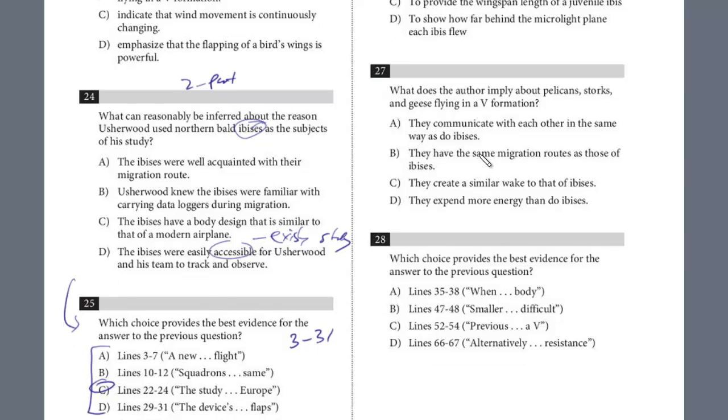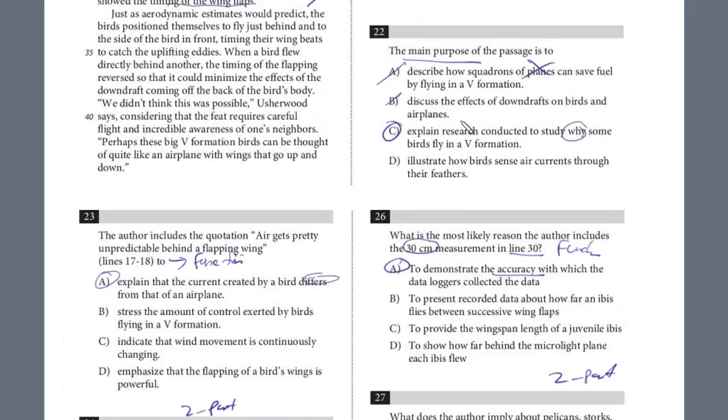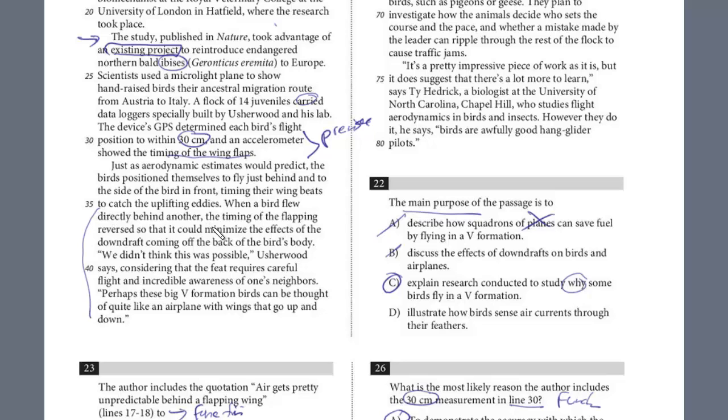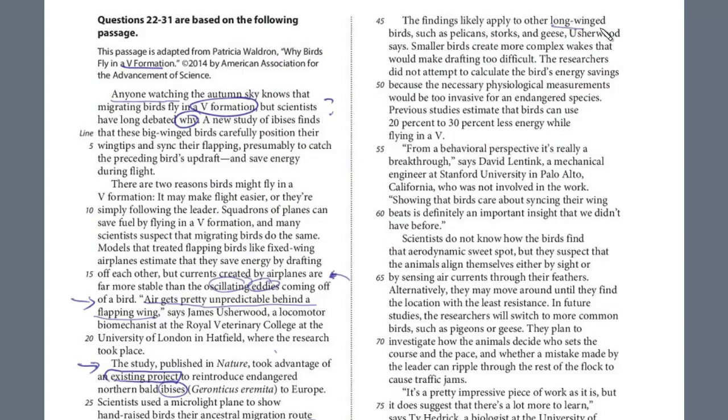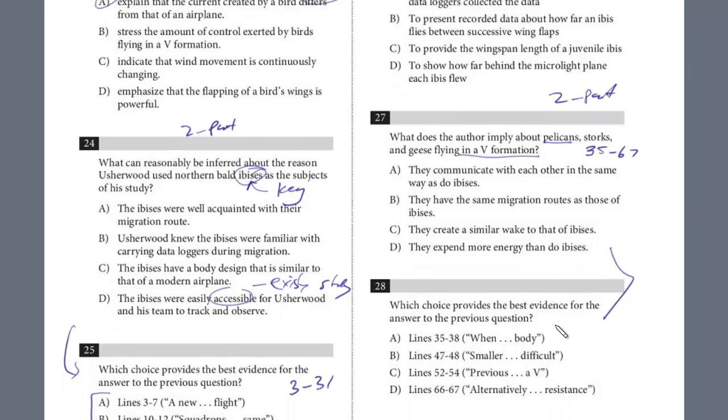Let's do the last two on this page, 27 and 28. Notice, this is another two-part question. We're going to scan down. We know the evidence is bound between 35 and 67. What does the author imply about pelicans, storks, and geese flying into V formation? This is kind of like a keyword, right? We're looking for these words: pelicans, storks, geese. Then we can see what the author implies. If we start at 35 and scan through here, talking about the V formation, there's no mention of those other birds. Then let's go to the beginning of the next one. The findings likely apply to other long-winged birds, such as pelicans, storks, and geese, Usherwood says. The findings from that experiment, he's saying it's likely, it's a good chance it could apply to these other birds. I don't think this is too difficult here, because we found where those were mentioned.